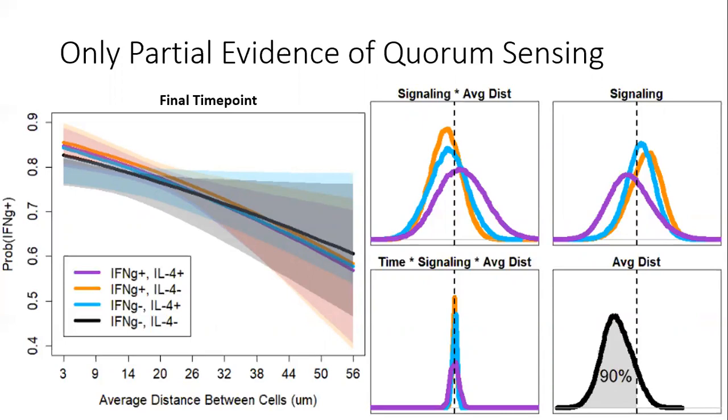What is more, there was a strong signature of cell density on Th1 differentiation. The more clustered cells were, that is, the smaller the distances among them, the more strongly they differentiated towards Th1 fates.